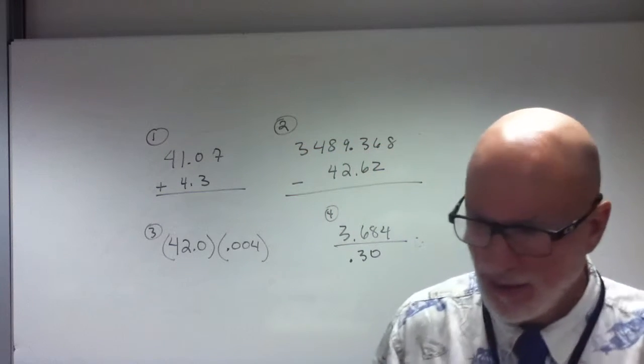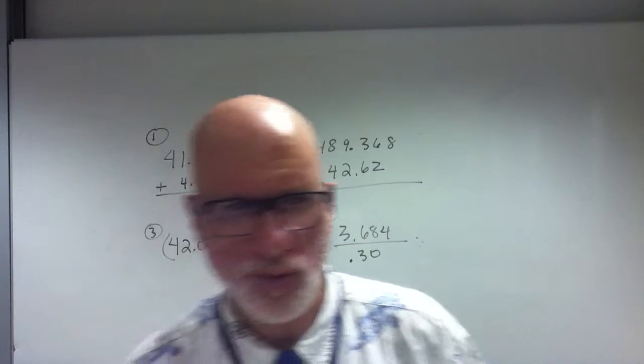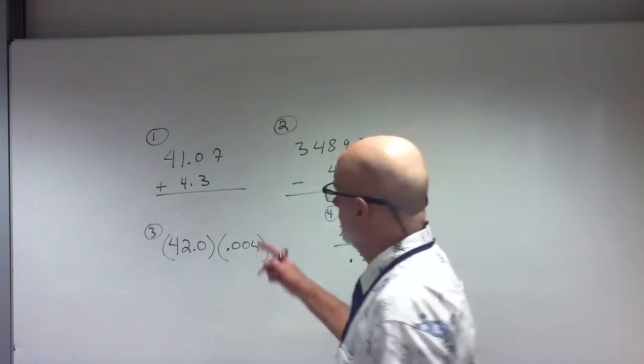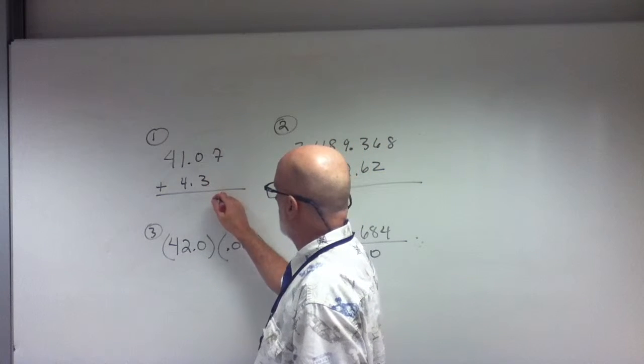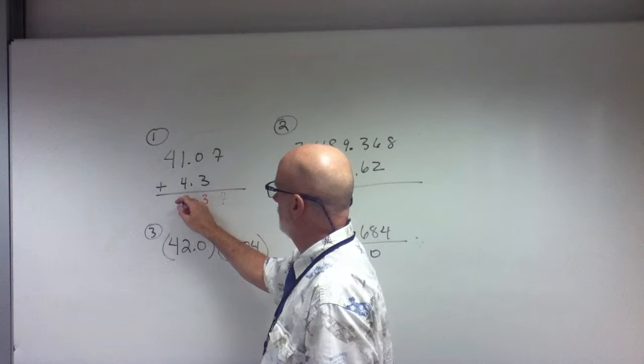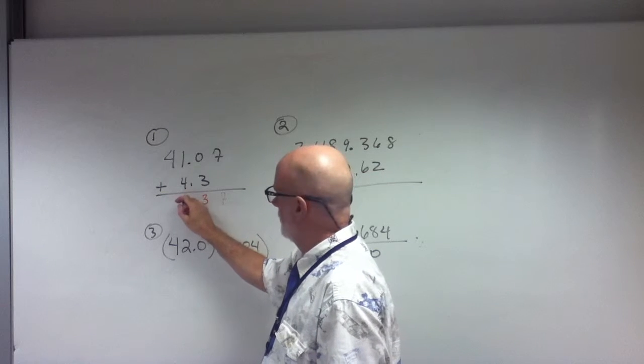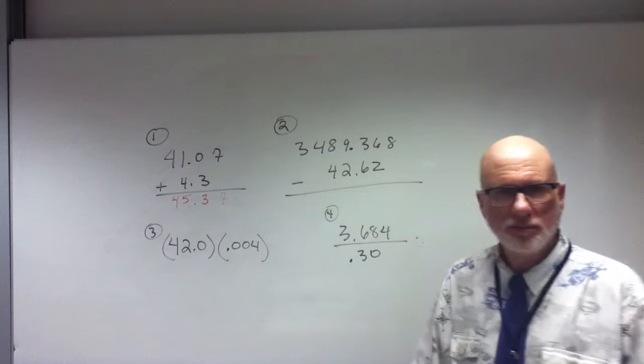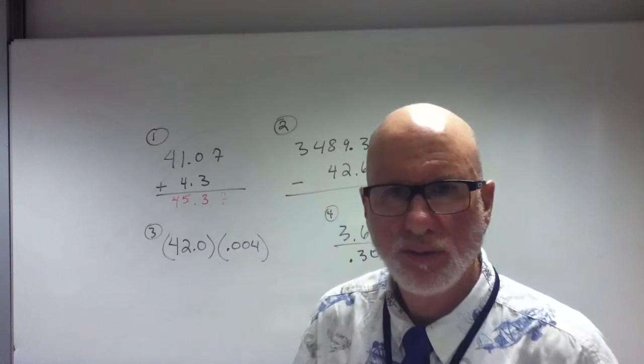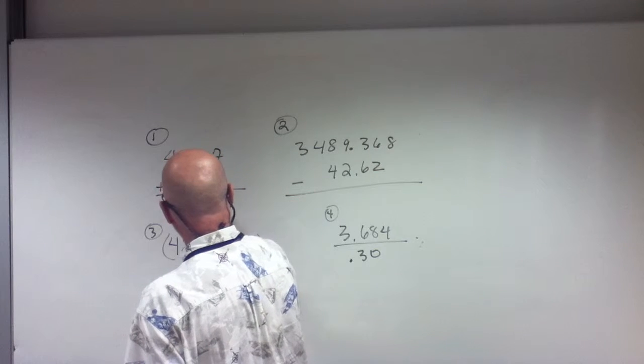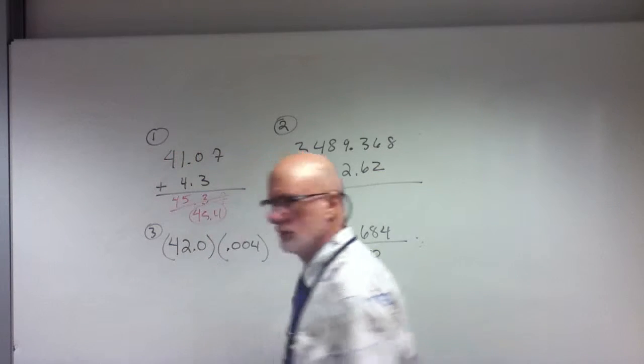And then we have another one where we have 3.684 divided by 0.30. That's going to be number 4. So get out your calculators. We should be able to do the addition and subtraction without a calculator. What's this going to be? You're going to add this. It's going to be 7, 3, what? 5, 4. What's the answer? Yes? 45.4. So the answer is 45.4.